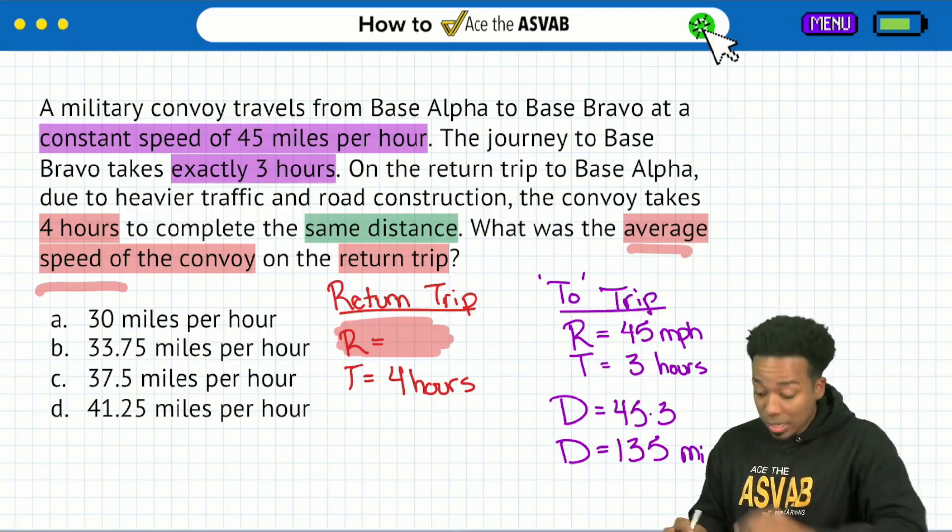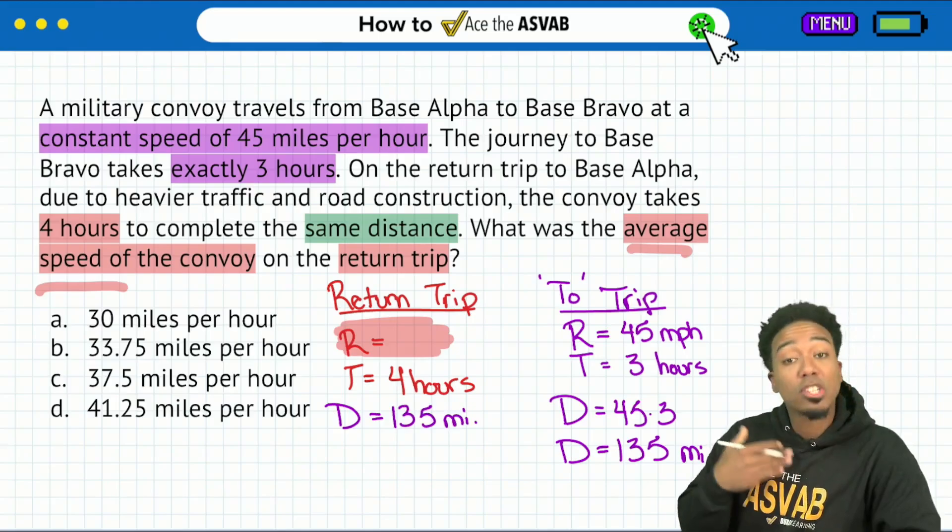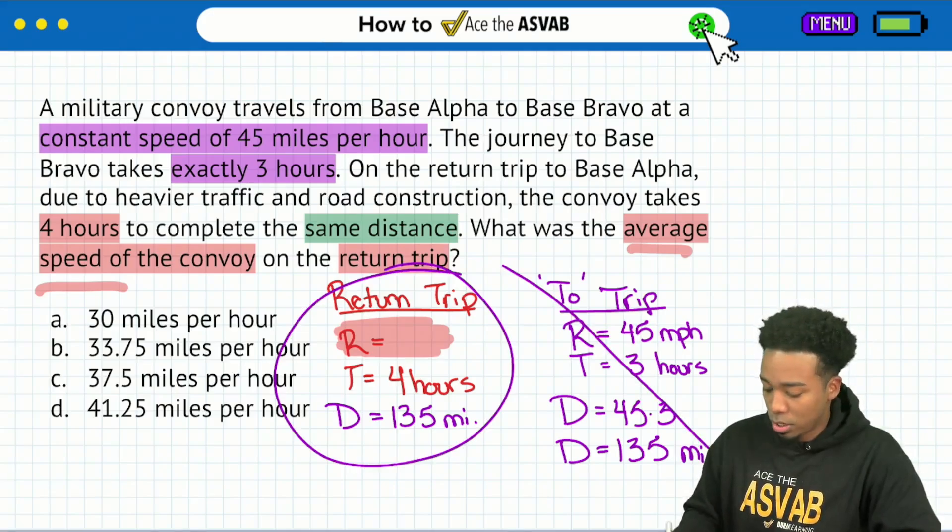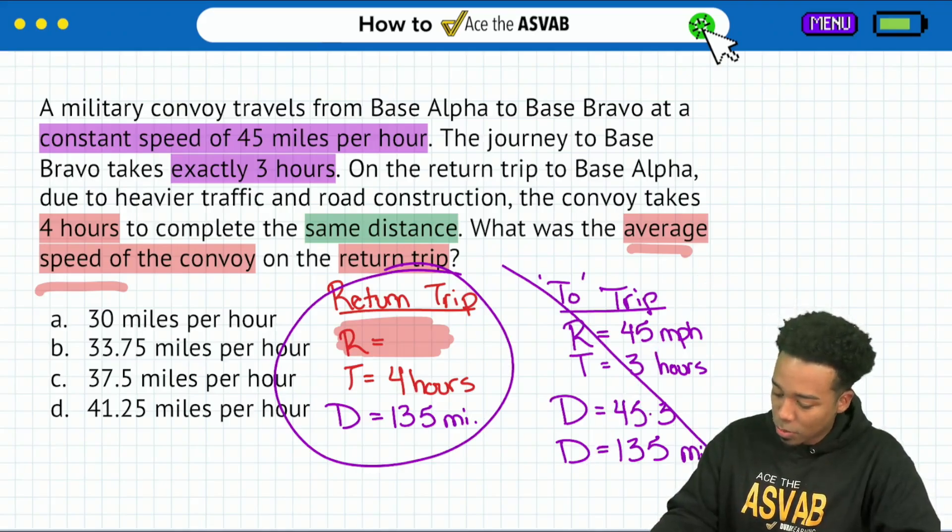But we have 135 miles for the distance to base Bravo, which means it's the same distance as the return trip right over here. And now we just have to calculate the speed or the rate using these values. We're done using these. We just needed that to get the distance.